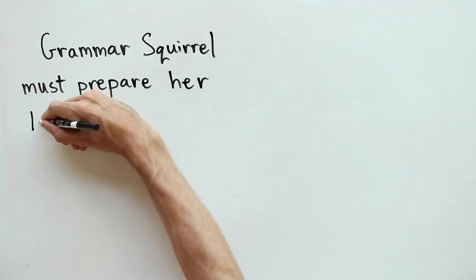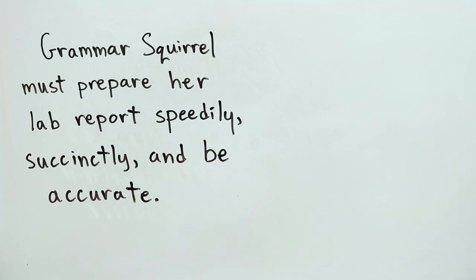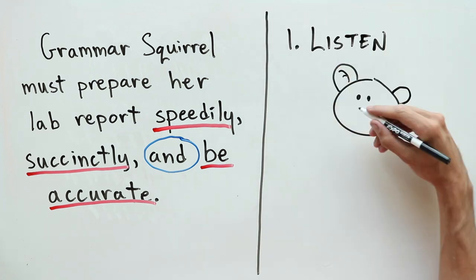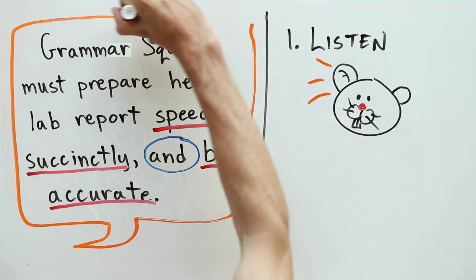But how do you do this and where do you start? Well, initially, you should find all sentences that include coordinating conjunctions and then look closely at the words either side. Our first tip is to read these elements out loud. Do they sound similar? If not, you probably have a problem.